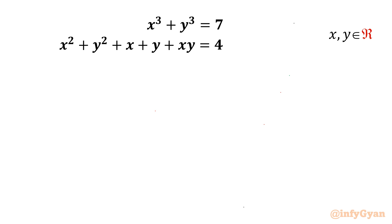Welcome back to InfiGaun friends. In this video we are going to take up one very interesting system of equations for x, y real values. The equations are: x³ + y³ = 7, and x² + y² + x + y + xy = 4. So let us get started straight away with our substitution.